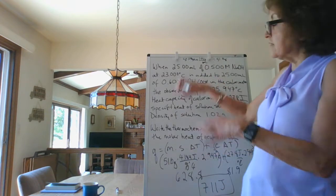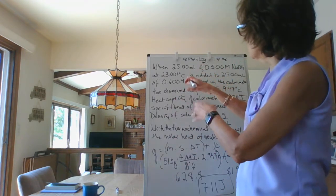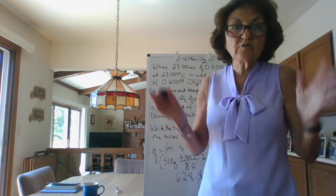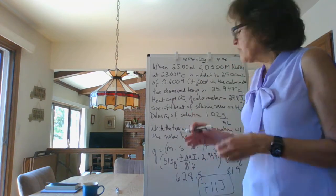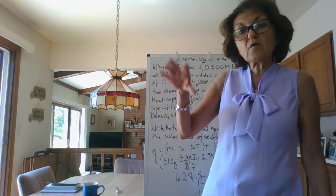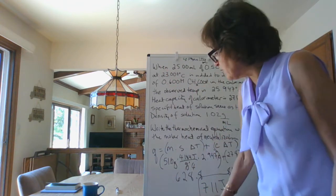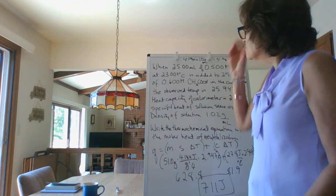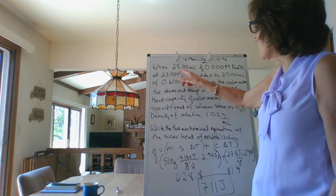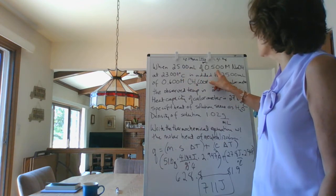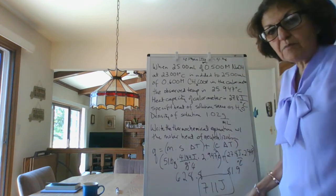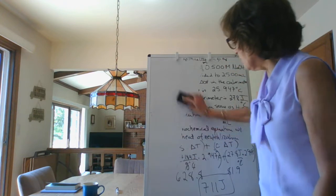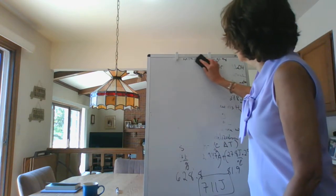So now we know that this reaction with this amount of acid and this amount of base is going to produce 711 joules. Great, but they want the thermochemical equation, they want per mole. When we write a thermochemical equation, we're going to have to know how much do we actually have here. So we've got 25 mils of a 0.5 molar sodium hydroxide. Let me erase all of this. You keep this number, we're going to be using it a little later on.